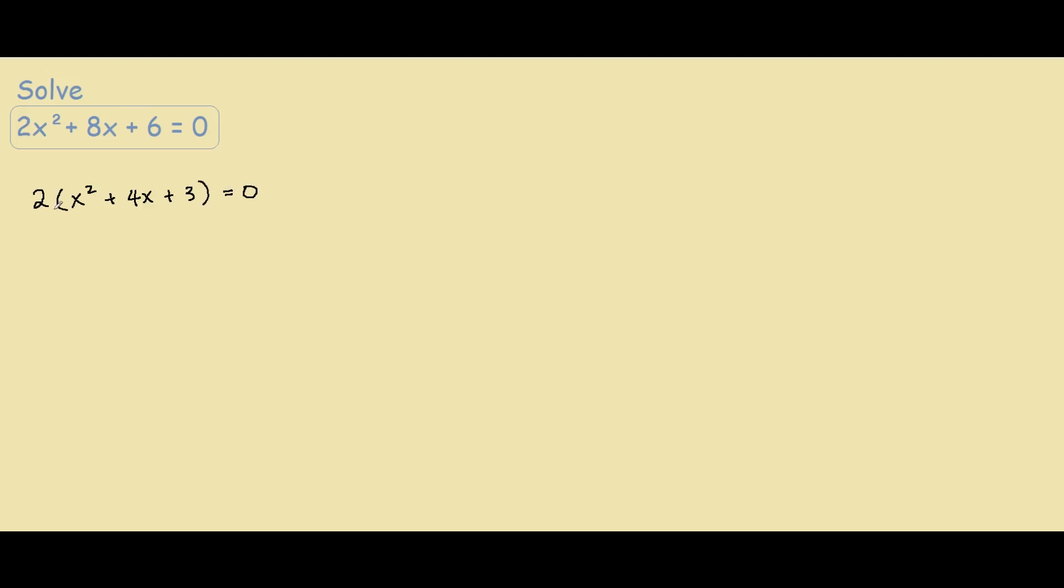So all we did was take a common factor of 2 out of each term. And now we can actually divide both sides by 2. So 2 divided by 2 and 0 divided by 2. This will cancel out because it equals 1, so we can ignore it. And 0 divided by 2 is still 0.